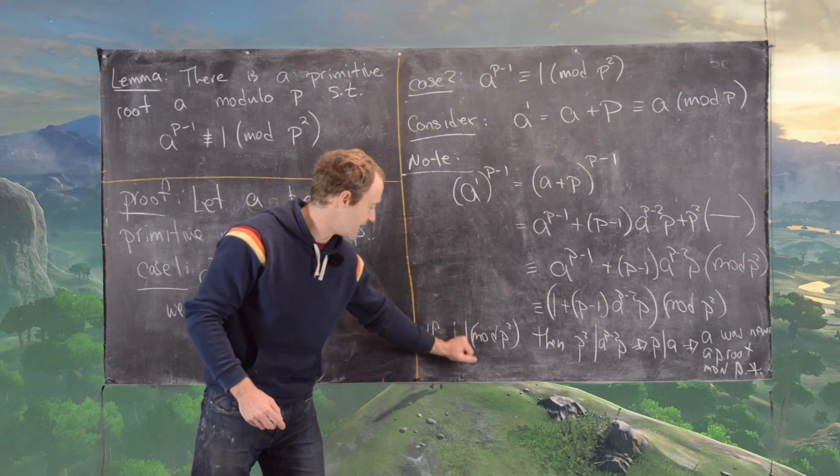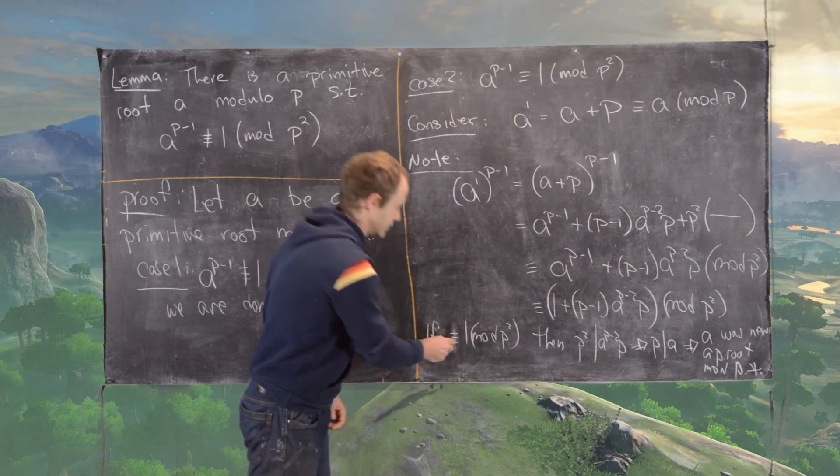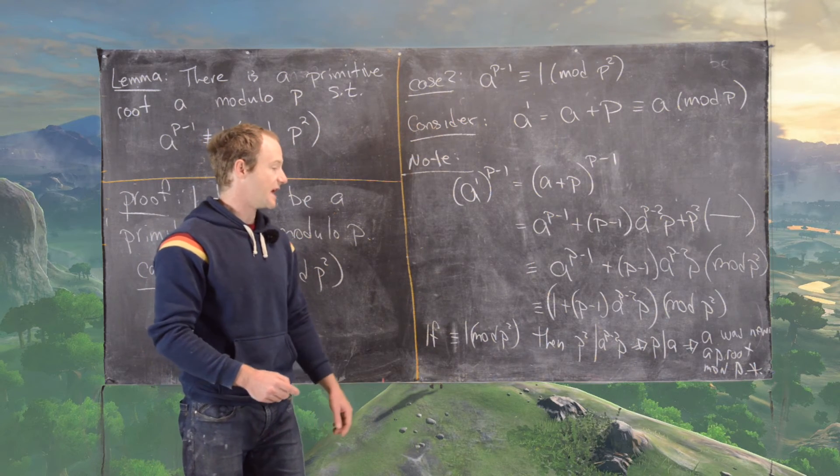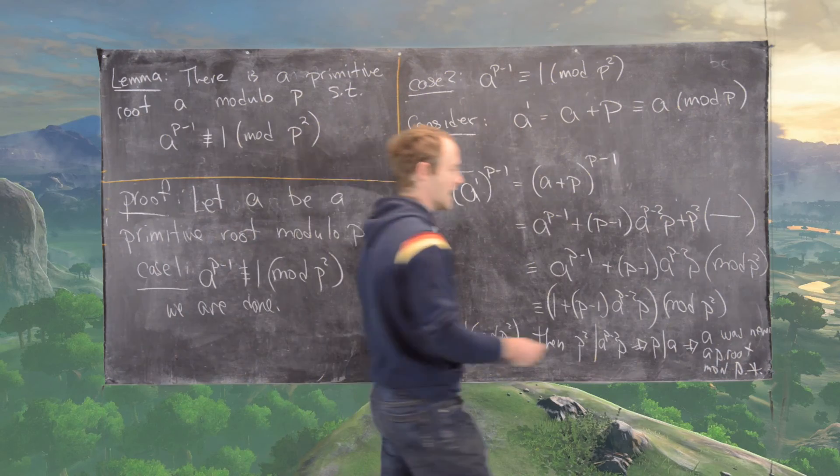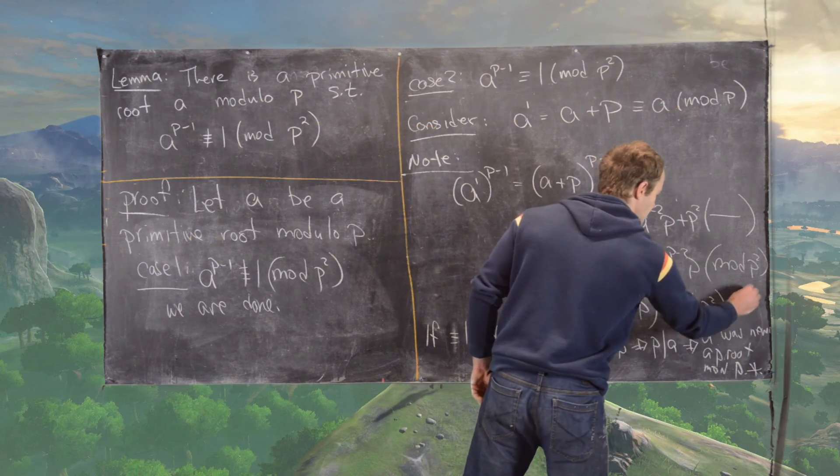And I should have said that if this is congruent to one mod p, we get that contradiction. So, in fact, it's not congruent to one mod p. And so we can add that in here. This is not congruent to one. And that finishes this proof.